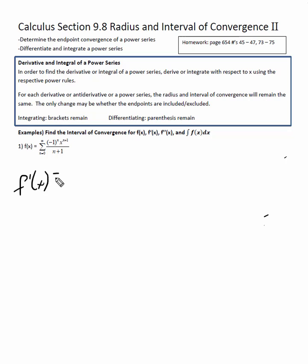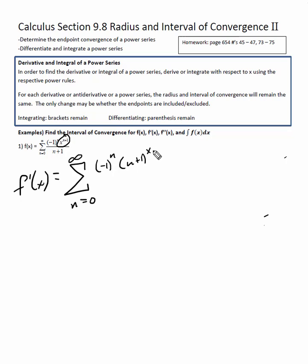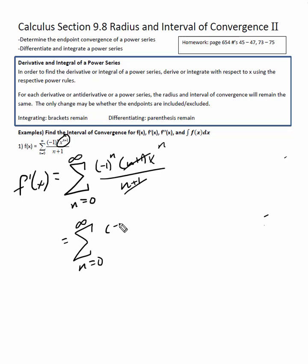Now I take the derivative of f of x. From n equals zero to infinity, the n stuff stays as constants. So I get negative one to the n, and when I take the derivative of x to the n plus one, it's n plus one times x to the n plus one minus one, which is x to the n, over n plus one. The n plus ones cancel, so I'm left with the summation from n equals zero to infinity of negative one to the n times x to the n.